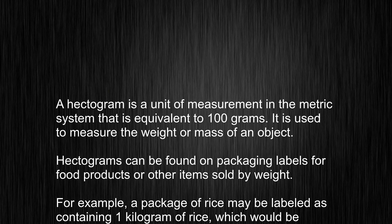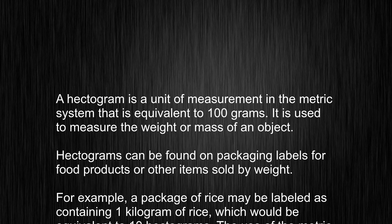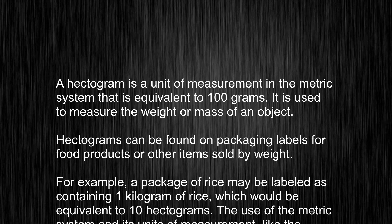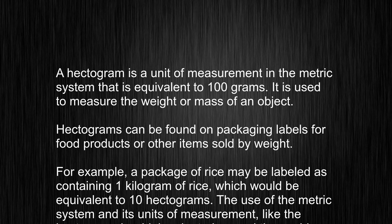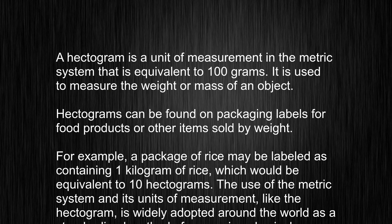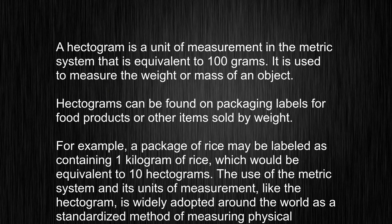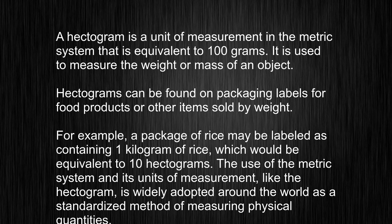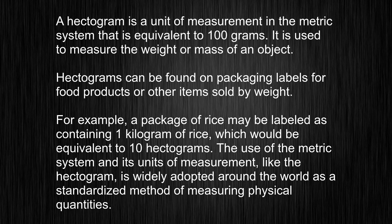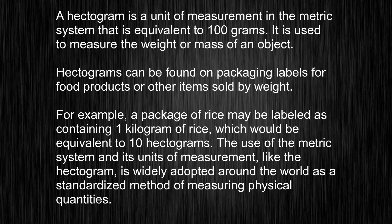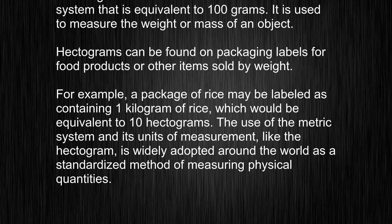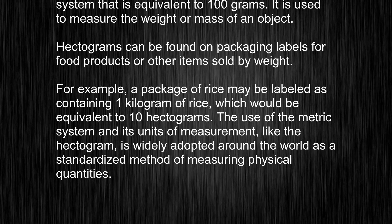A hectogram is a unit of measurement in the metric system that is equivalent to 100 grams. It is used to measure the weight or mass of an object. Hectograms can be found on packaging labels for food products or other items sold by weight. For example, a package of rice may be labeled as containing 1 kilogram of rice, which would be equivalent to 10 hectograms.